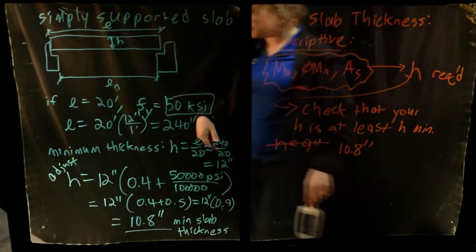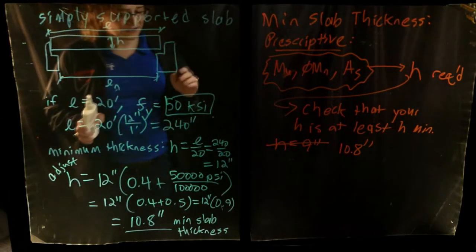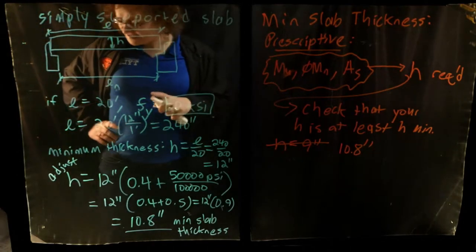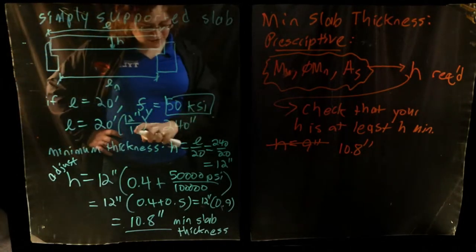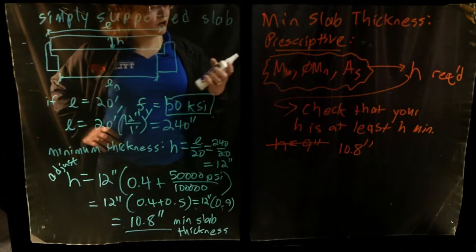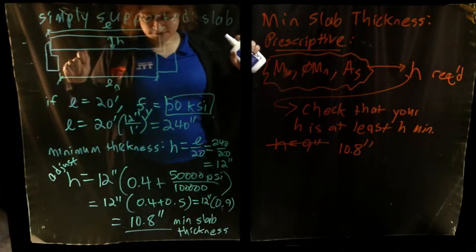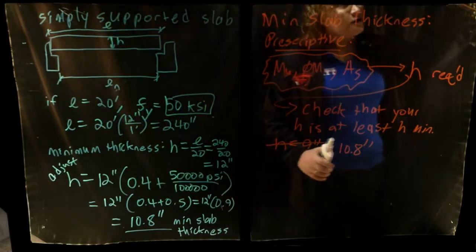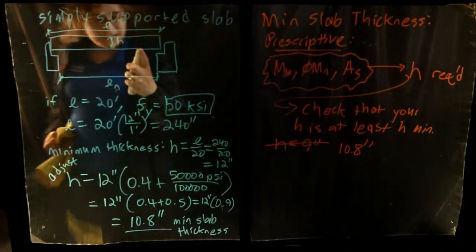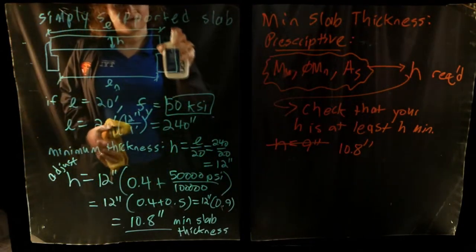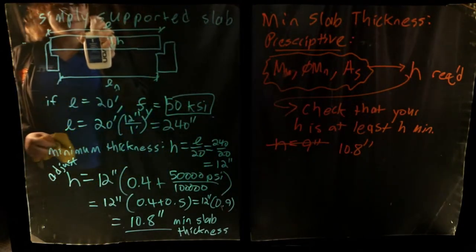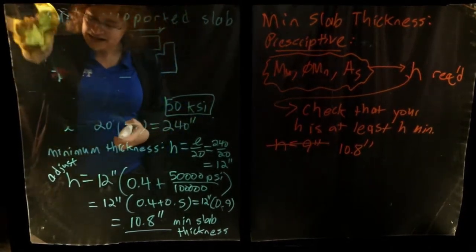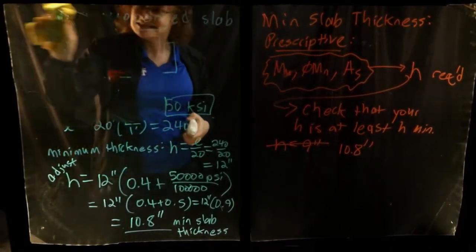Any questions on slab thickness? Hopefully fairly straightforward, but it's a nice opportunity to illustrate the idea of prescriptive code requirements. I'm not going to explore each prescriptive requirement to the same depth, but I do want to illustrate how these work in terms of the interaction of mechanics and code.